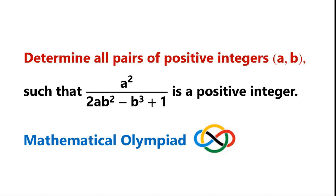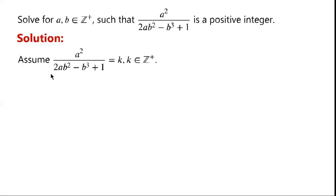To determine all powers of positive integers a, b such that a squared over 2ab squared minus b cubed plus 1 is a positive integer, we assume that a squared over 2ab squared minus b cubed plus 1 equals k, where k is a positive integer. By rearranging the equation,